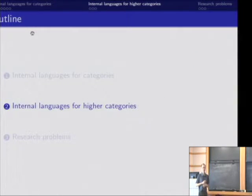So that was my lightning overview of internal languages for categories and their usefulness. So now let me say a little bit about higher categories.